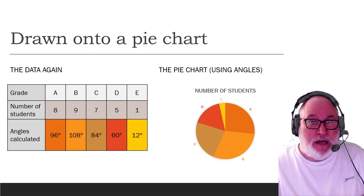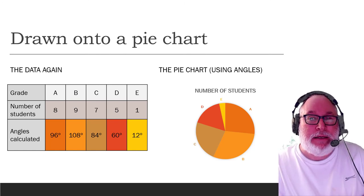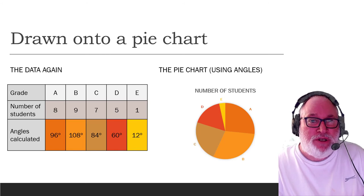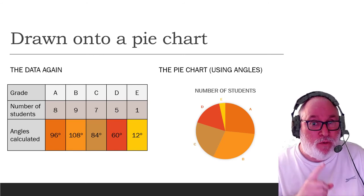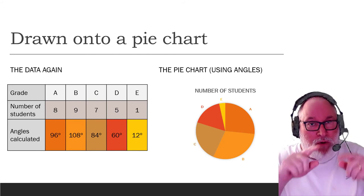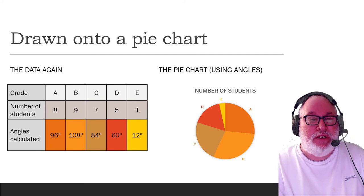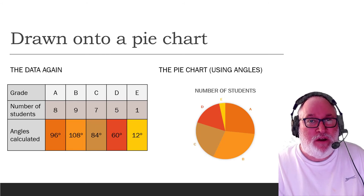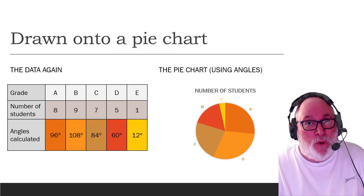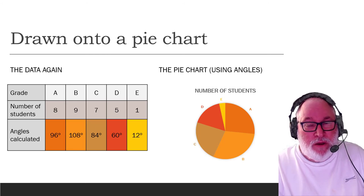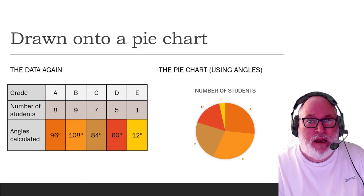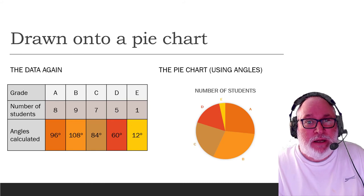So obviously B has got the greater angle, it's 108 degrees. The smallest, Grade E, there's only one student out of 30. That worked out, 1 over 30 of 360 degrees is 12 degrees. So the E, which is the yellow one at the top there, which is 12 degrees.